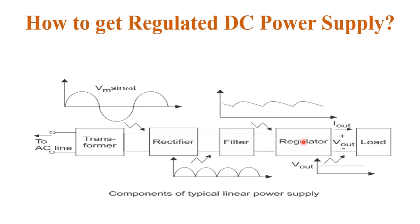The output of the filter is given to the regulator. The regulator maintains a constant DC output voltage, whether the input voltage is varying or the load current is varying. The regulator circuit is constructed from Zener diodes, ICs, and transistors. The output of the regulator is a regulated DC power supply — a straight line with no ripple — which is safe for all electronic circuitry and is given directly to the load.